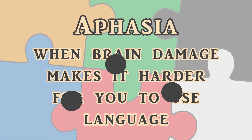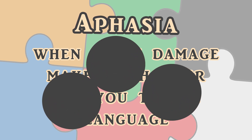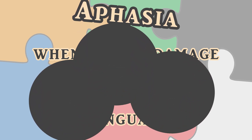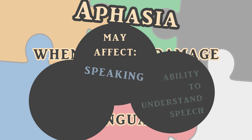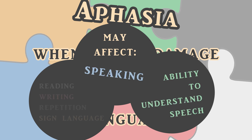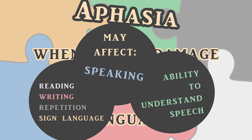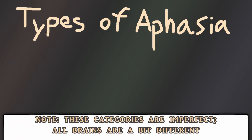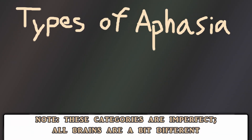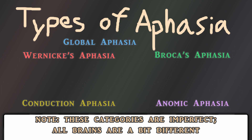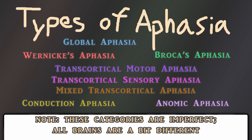Aphasia is the disorder that occurs when brain damage makes it harder for you to use language. It may affect the way you speak and understand speech, among other symptoms. Researchers have created types of aphasia based on symptoms, but because the brain's language centers are complex, these categories are not perfect. Most researchers agree that there are at least eight subtypes of aphasia, each defined by the limits of that person's language capabilities.